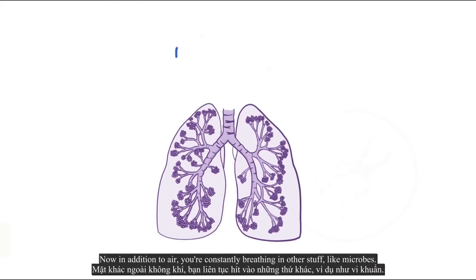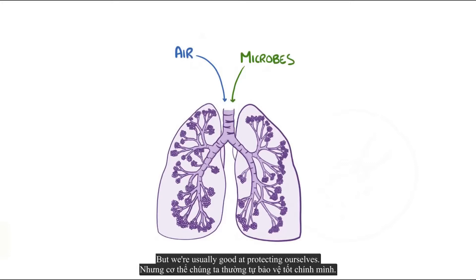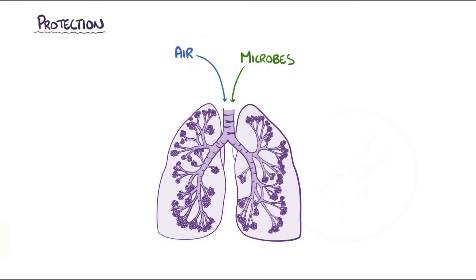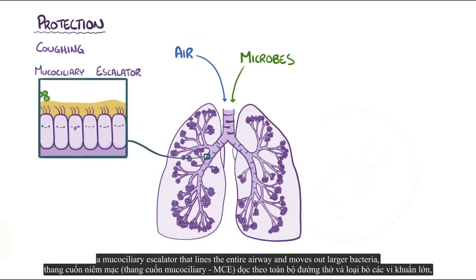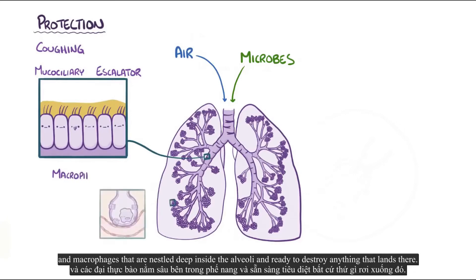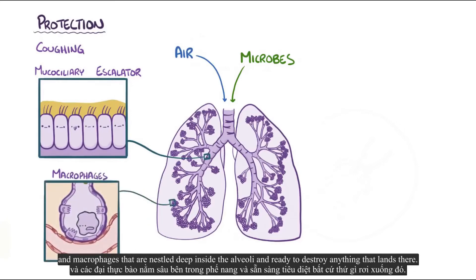In addition to air, you're constantly breathing in other stuff like microbes, but we're usually pretty good at protecting ourselves. We have mechanical techniques like coughing, a mucociliary escalator that lines the entire airway and moves out larger bacteria, and macrophages that are nestled deep inside the alveoli and ready to destroy anything that lands there.